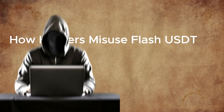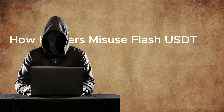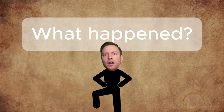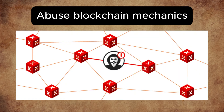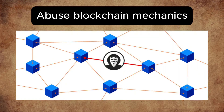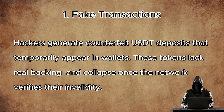How do hackers misuse Flash USDT? You might wonder how people even create Flash USDT. The answer is simple — they abuse blockchain mechanics. First, fake transactions: hackers generate counterfeit USDT deposits that temporarily appear in wallets. These tokens lack real backing and collapse once the network verifies their invalidity.